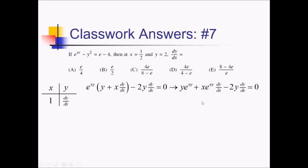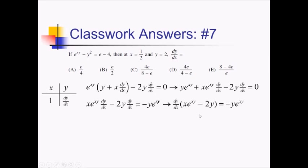I move anything without dy over dx to the right side. On the left: x e to the xy dy over dx minus 2y dy over dx. On the right: negative y e to the xy. Factoring out dy over dx on the left leaves x e to the xy minus 2y inside parentheses. Dividing by that gives dy over dx by itself — this is our general derivative.